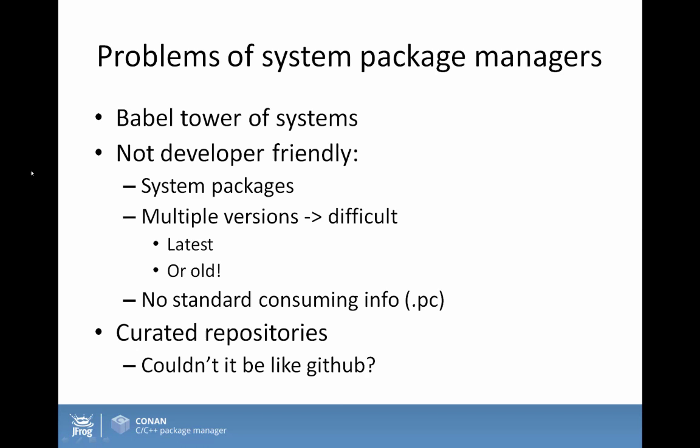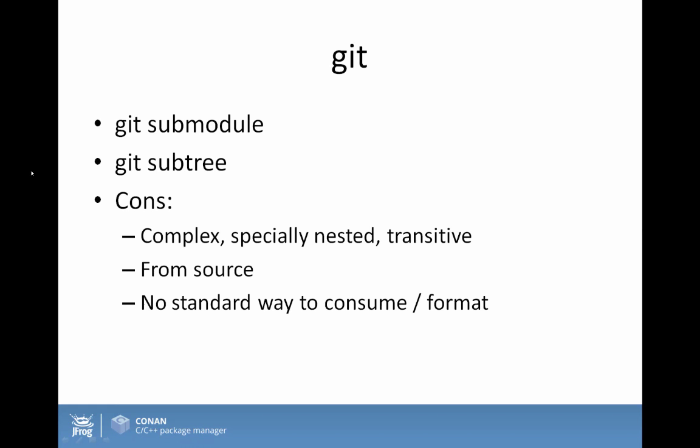Besides system package managers, Git also deserves mention — specifically Git submodules and Git subtree. Both have been used by C and C++ developers to kind of manage dependencies. From my point of view, friends don't let friends use Git features for real dependency management, because at the end it's complex, error-prone, and not really a proper solution — but it's something people have been doing for a while.